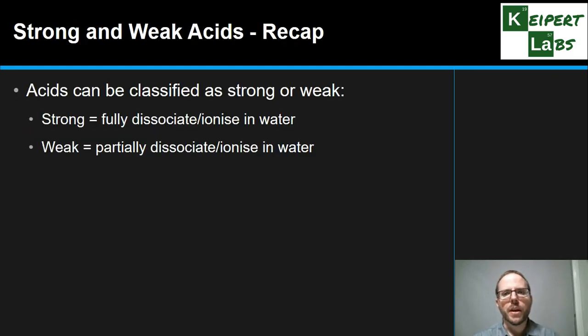So, what do we mean by strong and weak acids? Well, we know that acids can be classified as either strong or weak. A strong acid will fully dissociate or fully ionize in water. A weak acid will only partially ionize or dissociate in water. Now remember that for something to be strong, it has to be completely strong, 100% dissociation, but there can be various degrees of weakness when we're thinking about acids.